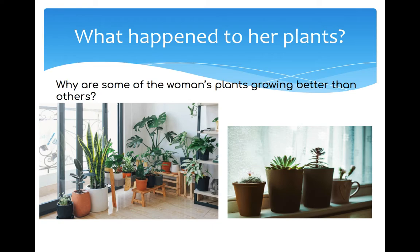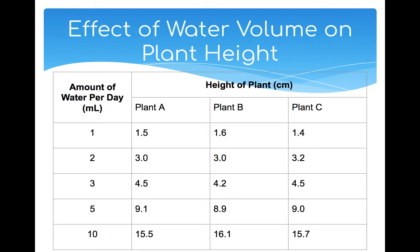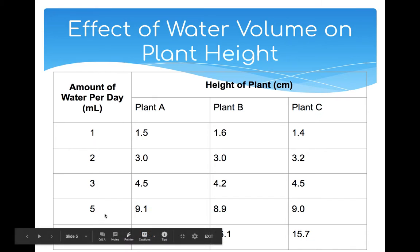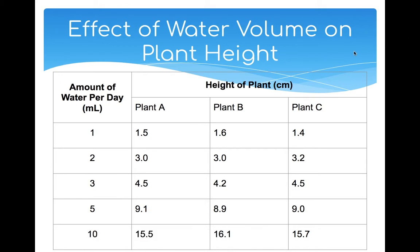We're going to walk through an example of what a scientific conclusion should look like, using the same example from our previous video. We're going to be thinking about a woman with houseplants, some of which are doing better than others. The question we're trying to answer is: why are some of the woman's plants growing better than others? She decided to test what's going on by providing her different plants with different amounts of water, then tracking how tall each plant grew.